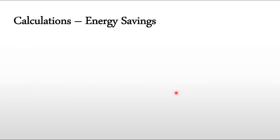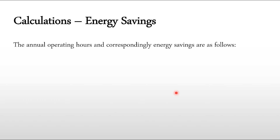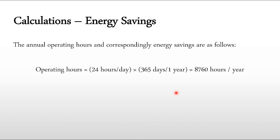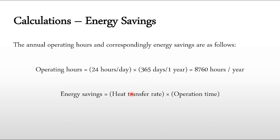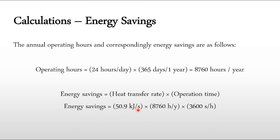Next we calculate the energy savings. First, the annual operational hours: the plant runs 24 hours a day for 365 days, giving 8,760 hours per year. Energy savings = heat transfer rate × operation time = 50.9 kJ/s × 8,760 hr/yr.